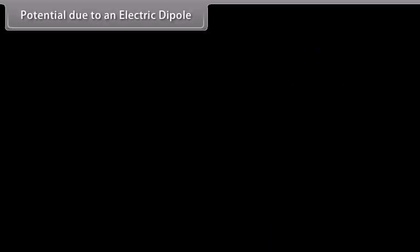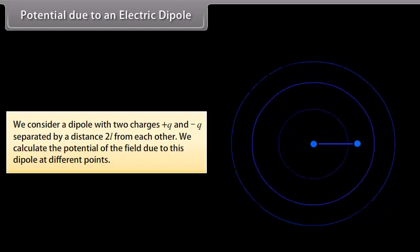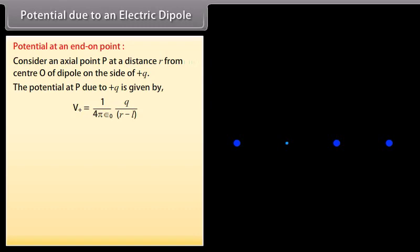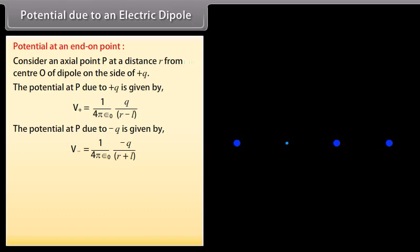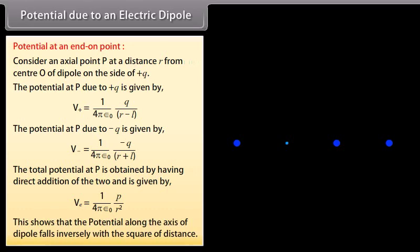Potential due to an electric dipole. We consider a dipole with two charges plus Q and minus Q separated by a distance 2L from each other. We calculate the potential at different points. For an end-on point: consider an axial point P at distance R from center O of the dipole on the side of plus Q. The potential at P due to plus Q is V_positive equals 1 upon 4π ε₀ multiplied by Q upon (R minus L). The potential due to minus Q is V_negative equals 1 upon 4π ε₀ multiplied by minus Q upon (R plus L). The total potential V_E equals 1 upon 4π ε₀ multiplied by P upon R squared, showing that the potential along the axis falls inversely with the square of distance.